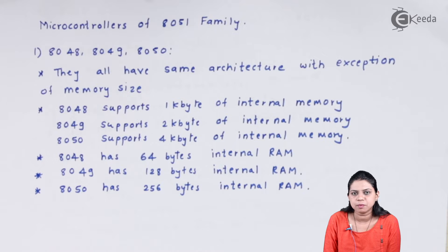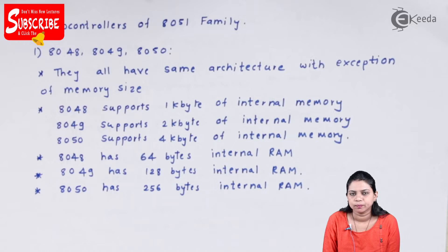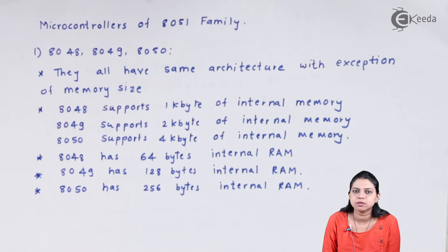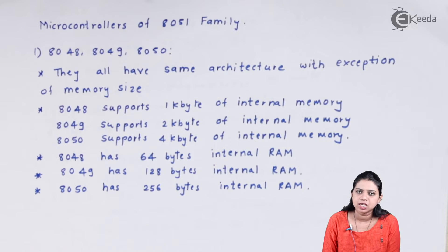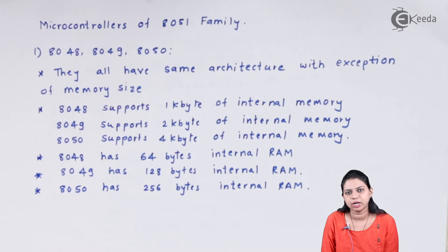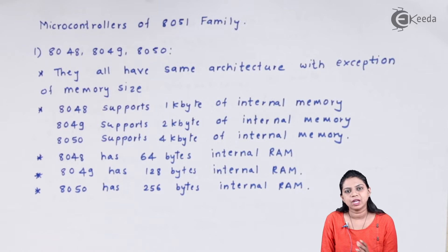The first series of the microcontroller family is called 8048, 8049, and 8050. All these microcontrollers are identical in architecture — there is no difference in the architecture. The only difference is in the memory size. In each case the memory gets doubled, so everywhere there was a difference in the memory size.